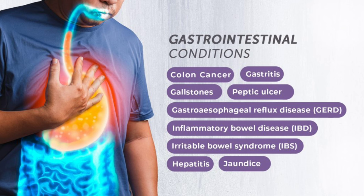Celiac disease is an autoimmune disease involving sensitivity to gluten. Gluten-rich diets include wheat, rye, and barley. In celiac disease, hypersensitivity causes villous atrophy in the GIT — villi are responsible for reabsorption — leading to malabsorption of iron, folic acid, vitamin B12, and fat.